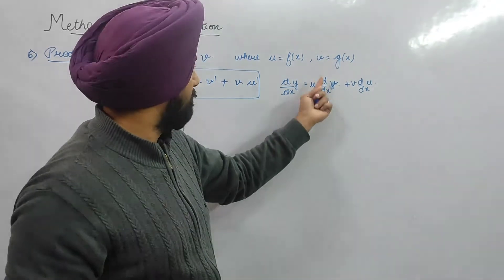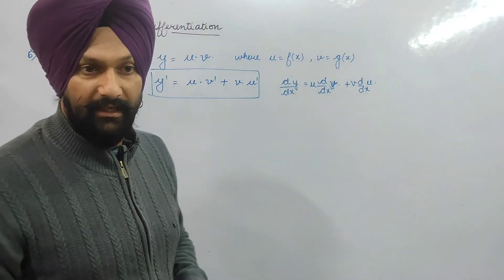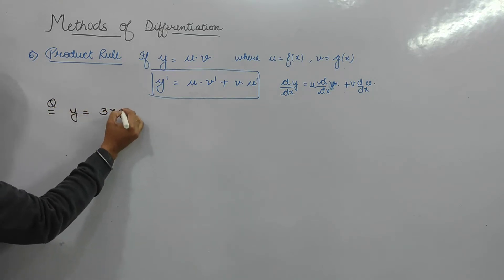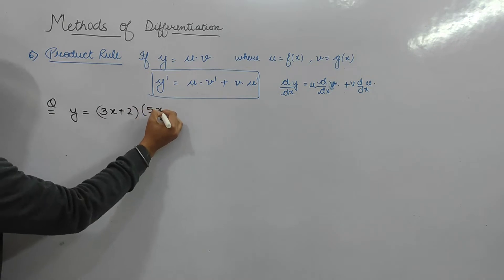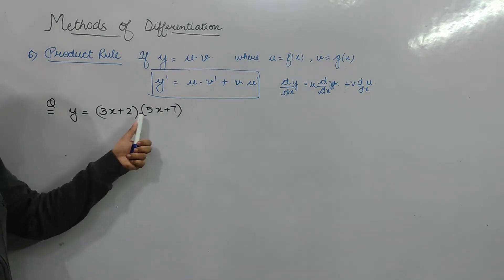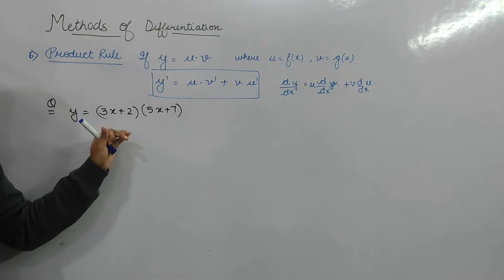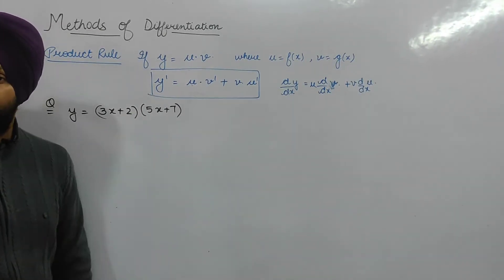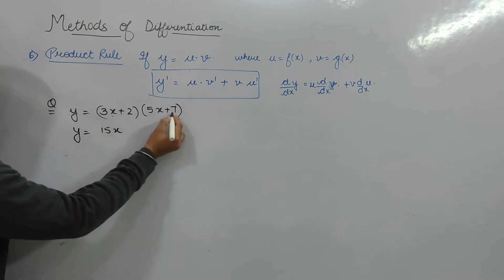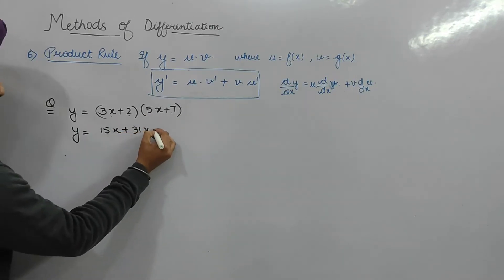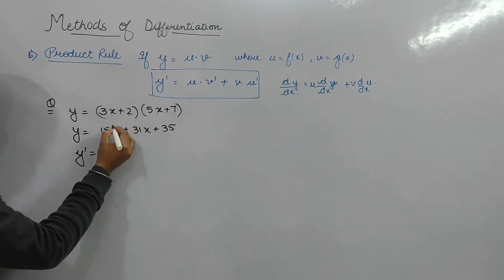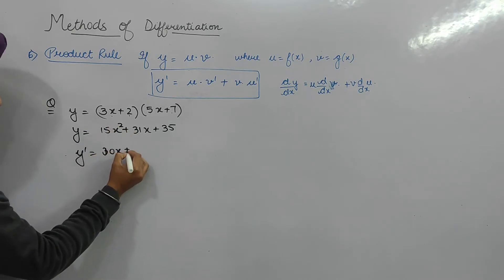Both functions are differentiated with respect to x. Taking a simple example: y equals (3x + 2)(5x + 7), the product of two linear functions. The basic way is to expand: 15x² + 21x + 10x + 14, giving us 15x² + 31x + 14.